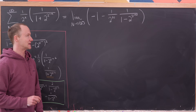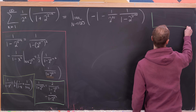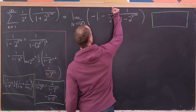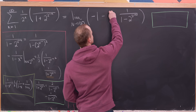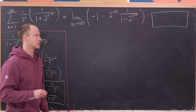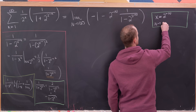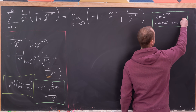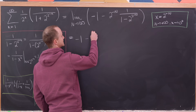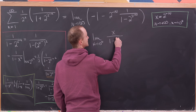We've written our infinite sum as a limit. To evaluate it, I'll use a change of variables. We have 2 to the N and 2 to the minus N, so it's natural to write 1 over 2 to the N as 2 to the minus N. Setting x equals 2 to the minus N, as N goes to positive infinity x approaches 0 from above. Bringing out the negative 1, we get negative the limit as x goes to 0 from above of x over 1 minus 2 to the x.